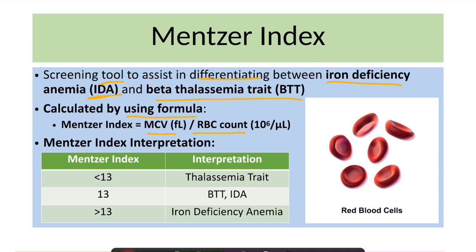If the index is less than 13, it is suggestive of thalassemia trait. If it is 13, it is inconclusive. And if it is more than 13, it is suggestive of iron deficiency anemia.